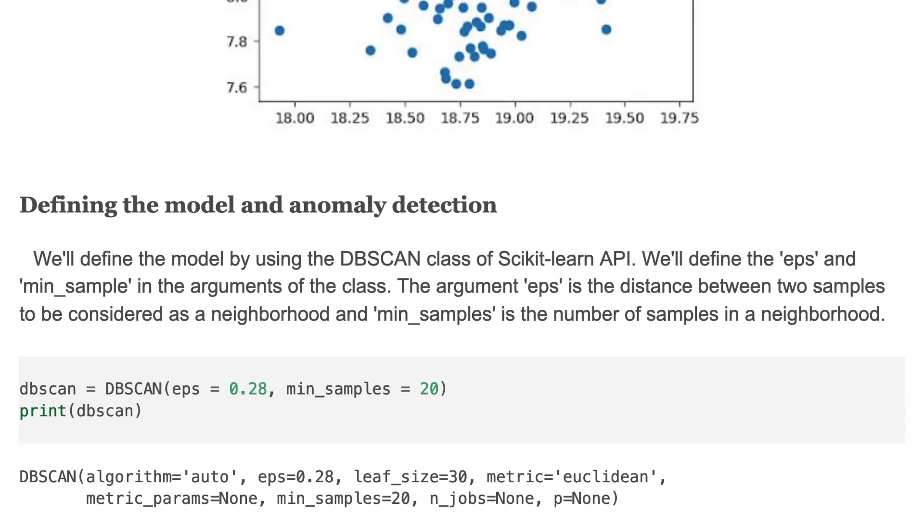We'll define the model by using DBSCAN class of scikit-learn API. We'll define the epsilon and the min_samples in arguments of the class. The argument epsilon is the distance between two samples to be considered as a neighbor. And the min_samples is the number of samples in a neighborhood.